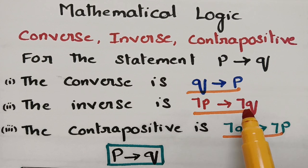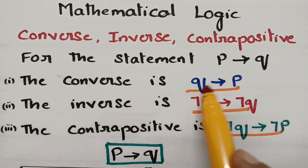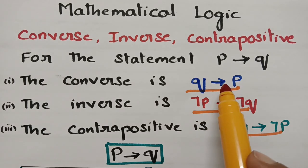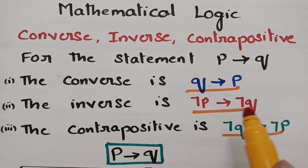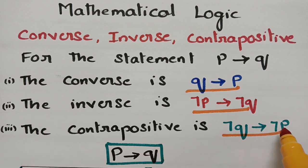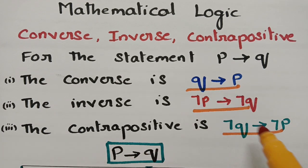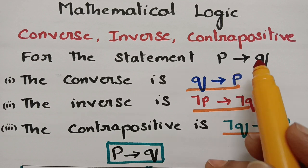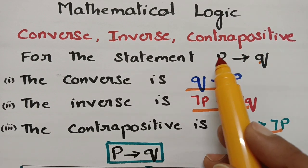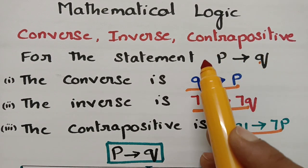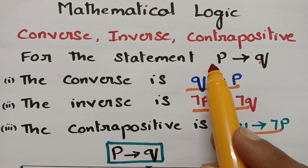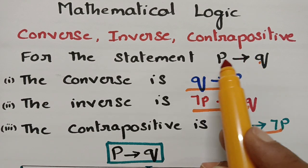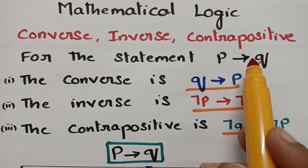These are the three formulae you have to remember for any statement. If asked to write the converse, transform P implies Q to Q implies P. For inverse, write negation P implies negation Q. For contrapositive, write negation Q implies negation P. Please remember: for converse and contrapositive it will be Q implies P, and for contrapositive add negations; for inverse, straight away apply negation to both P and Q.